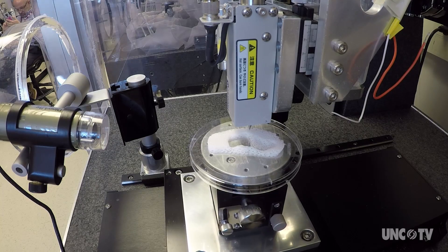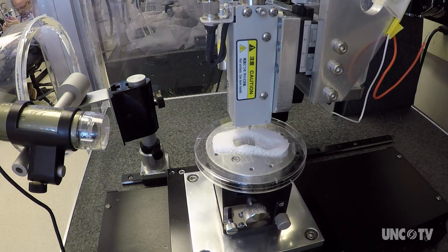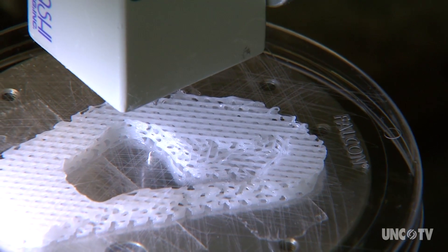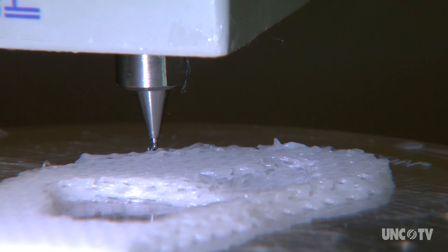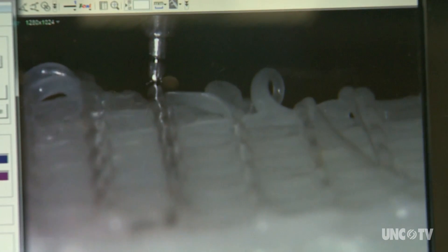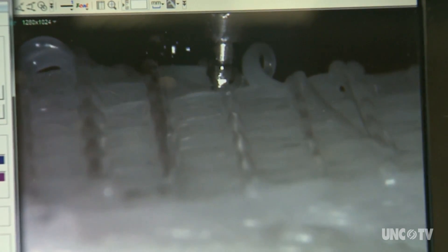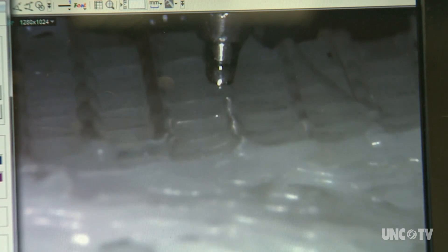This is the integrated tissue and organ printing system. What it prints is alive. There are tens of millions of living cells suspended in a gel. There's also a precise lattice work of microchannels, 200 microns wide, imprinted into the system. The vessels allow blood and nutrients to flow through the tissue.